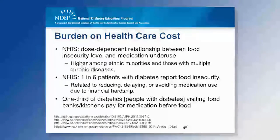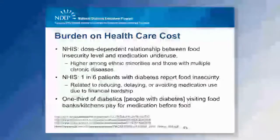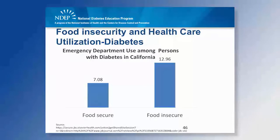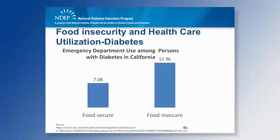A smaller study found that diabetic patients visiting food banks or soup kitchens — one-third of them were paying for medication versus food. The California Health Interview Survey, the largest state health survey, looked at emergency department utilization among diabetics. Food-secure diabetics reported an ED utilization rate of about 7 percent, while food-insecure diabetics visited the emergency department at nearly 13 percent. This high rate of healthcare utilization means higher co-pays and medical bills, pushing patients back into choosing between food and the healthcare they need.